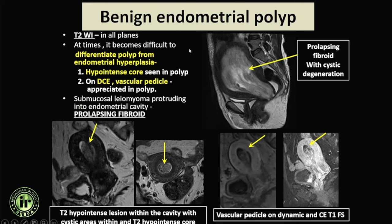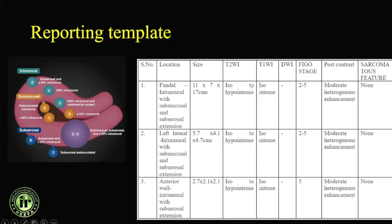Submucosal polypoid fibroids can look ill-defined or have uncertain organ of origin on ultrasound, but MRI clarifies these as polypoid endophytic submucosal fibroids. Our basic fibroid mapping reporting template includes: location, size of larger or clinically significant fibroids, T2 and T1 signal characteristics, diffusion restriction with ADC values if restricted, FIGO staging, post-contrast changes, and assessment for sarcomatous change.